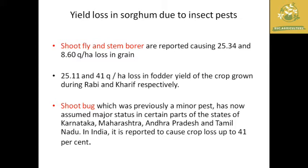25.1 and 41 quintals per hectare loss is recorded in the fodder yield when the crop is grown in Rabi and Kharif seasons respectively. Another major pest is the shoot bug, which was previously a minor pest but has transformed into a major pest in states like Karnataka, Maharashtra and Tamil Nadu, causing up to 41 percent crop loss in India.